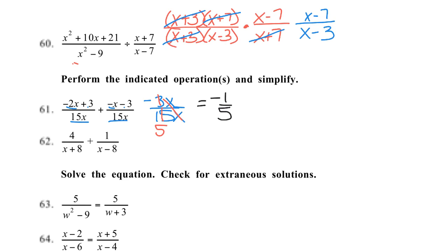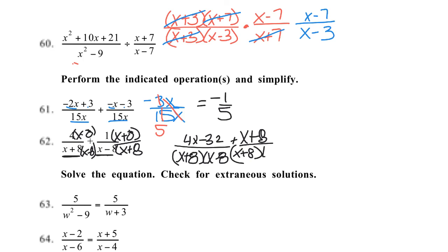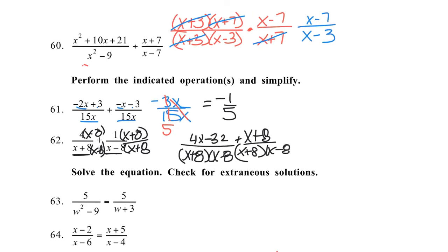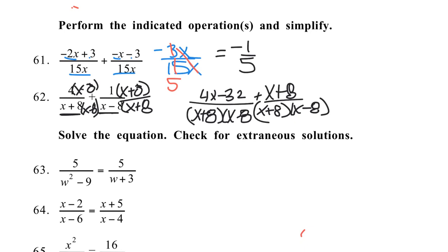Number 62, looks like you have the same denominator, but it's not. You have a plus 8 and a minus 8, so we have to multiply the first fraction by x minus 8 over x minus 8, and then we'll multiply the second fraction by the x plus 8, and that'll give us a common denominator. So the first one is 4x minus 32 over x plus 8, x minus 8, plus x plus 8 over x minus 8. You don't want to simplify anything here, don't divide out anything in your fractions, because the whole point was to get a common denominator so then you can add them together.